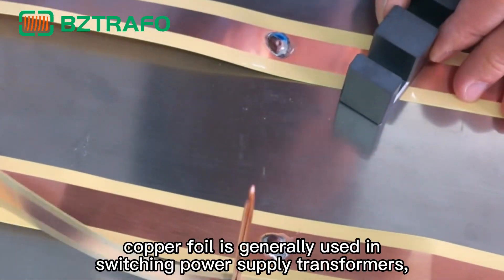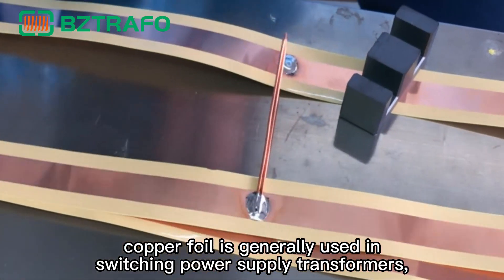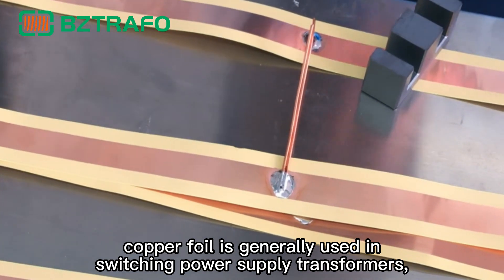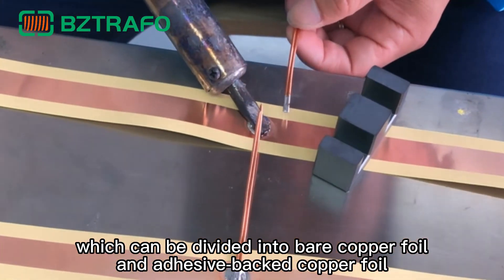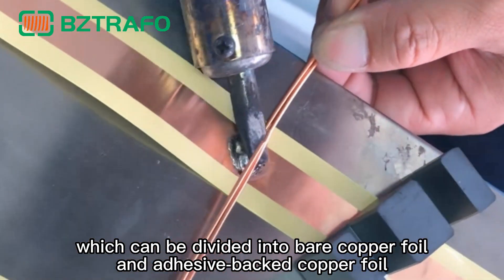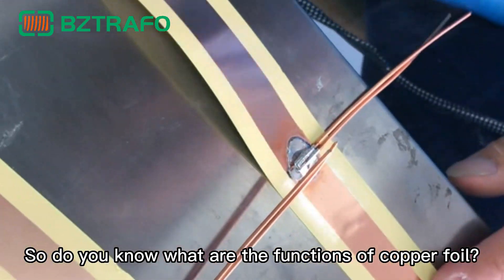In BZTrofo, copper foil is generally used in switching power supply transformers, which can be divided into bare copper foil and adhesive-backed copper foil. So do you know what are the functions of copper foil?